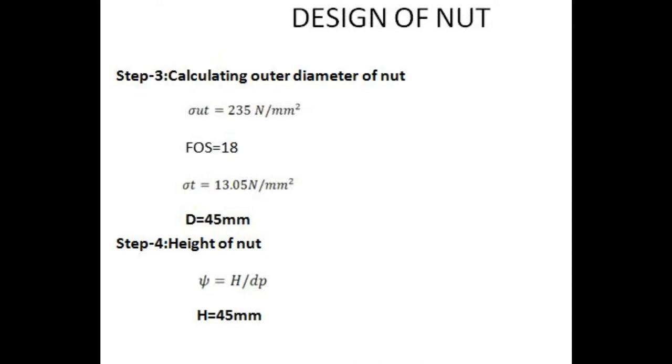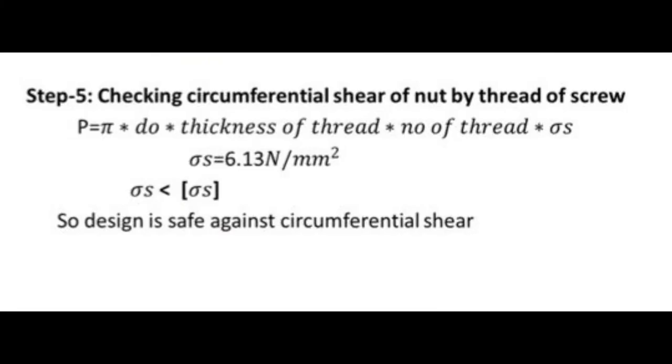Step 4: Height of nut. Xi equals h divided by pitch diameter. Therefore Xi equals 1.25 and pitch diameter is 25 mm, therefore height is coming out to be 45 mm.